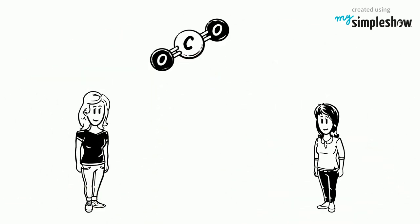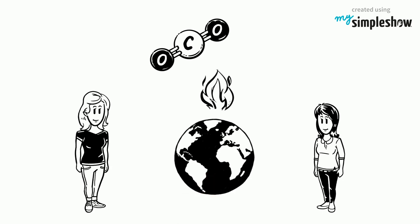Liz asks Sylvia what greenhouse gases are. Sylvia tells her that greenhouse gases are compounds that trap heat in the Earth's atmosphere, keeping the planet's surface warmer than it would be without them.